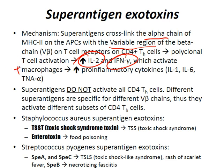Therefore you get an increase in pro-inflammatory cytokines like IL-1, IL-6, tumor necrosis factor alpha, etc. Note: superantigens do not activate all CD4 T-helper cells — different superantigens are specific for different beta variable chains. Thus, they activate different subsets of CD4 T-helper cells.